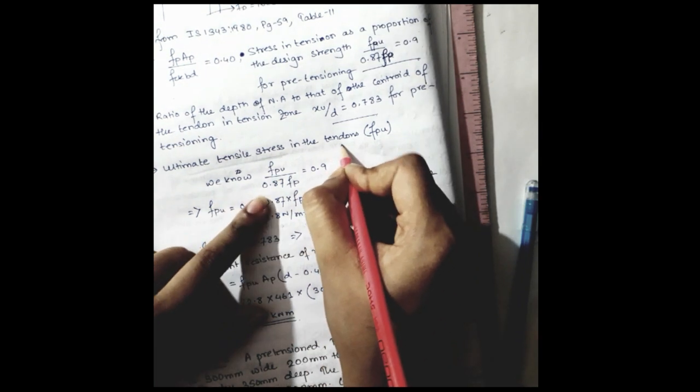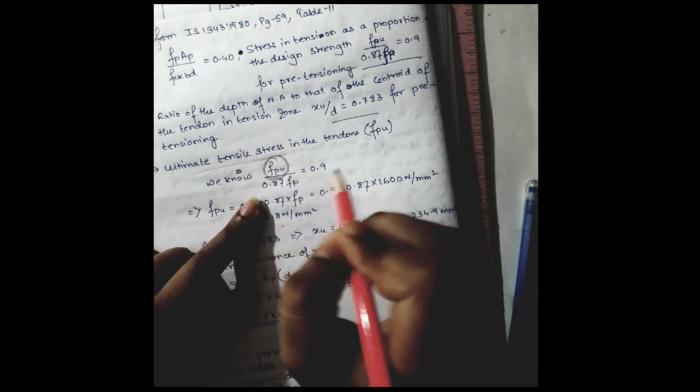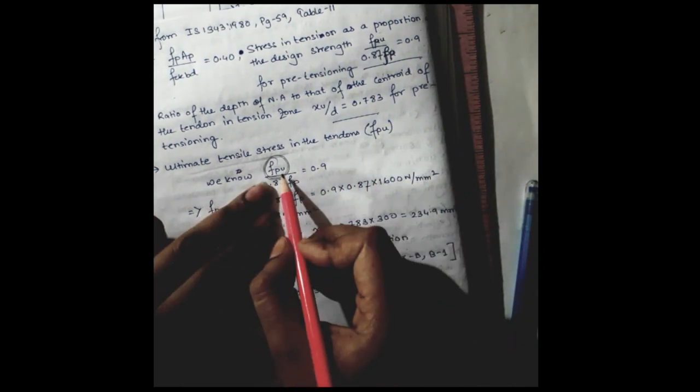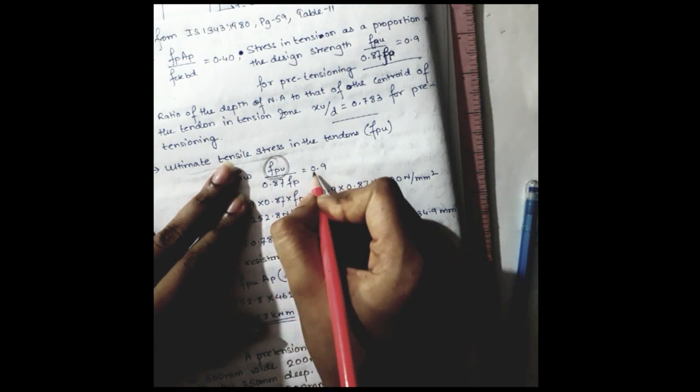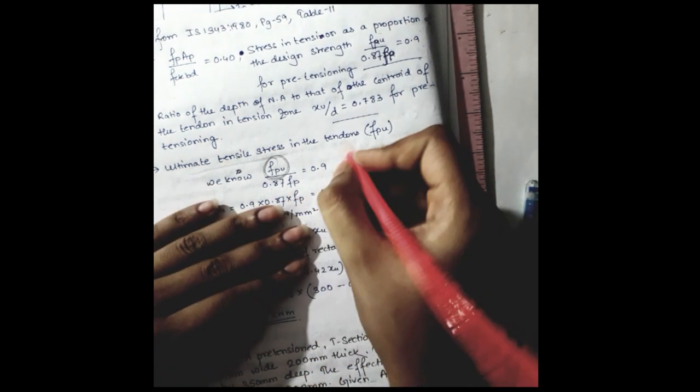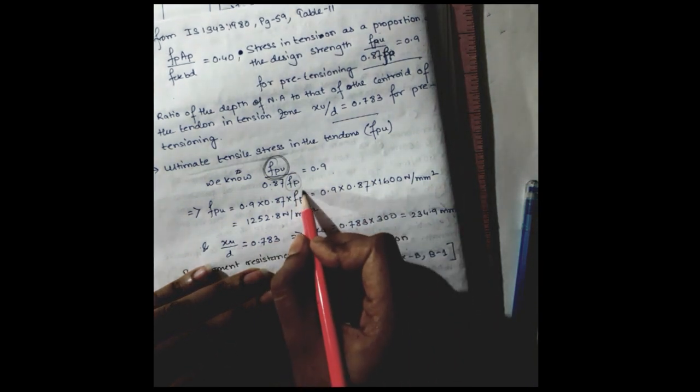This is the ultimate tensile stress in the tendon. So FPU divided by 0.87 FPU is equal to 0.9, we have got from the IS code. So we know FPU here. What is FPU? It is 1600 Newton per millimeter square.